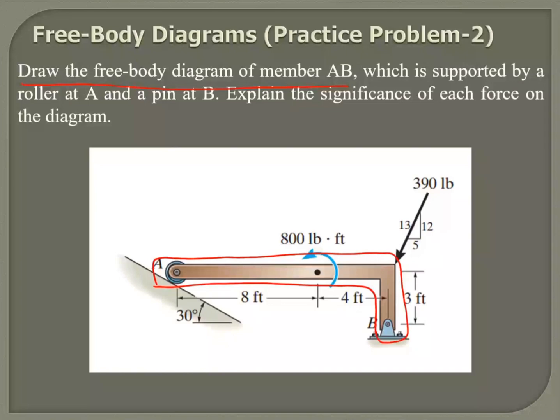Which is supported by a roller at A. We've got a roller at this end and a pin at B at this end. So we need to draw the free-body diagram.